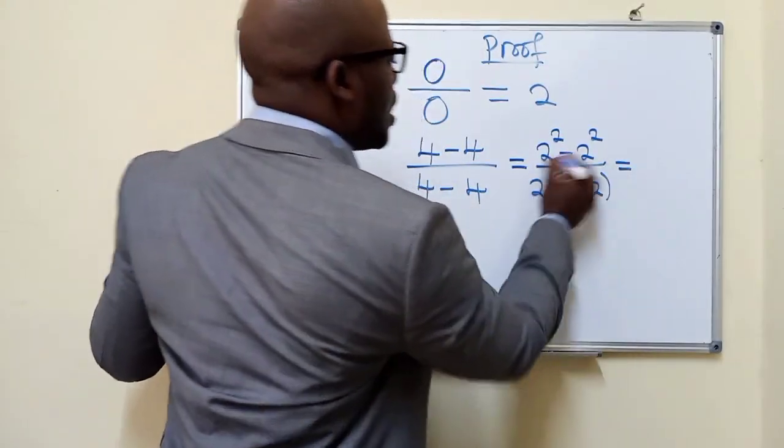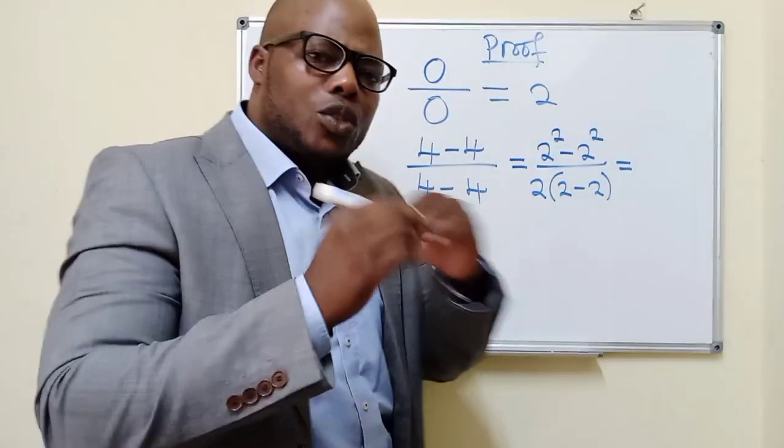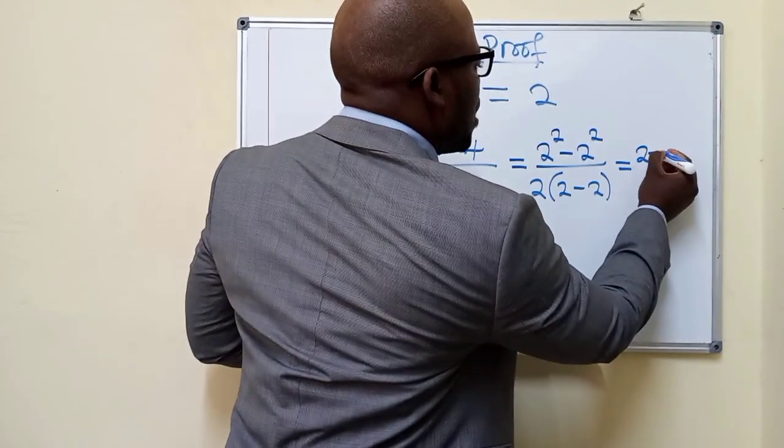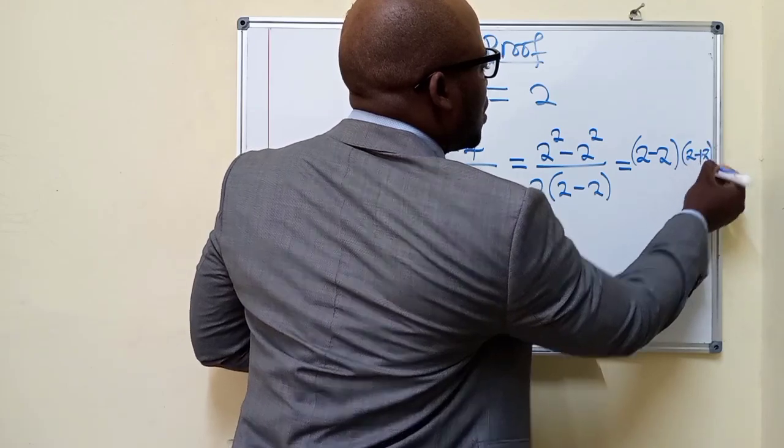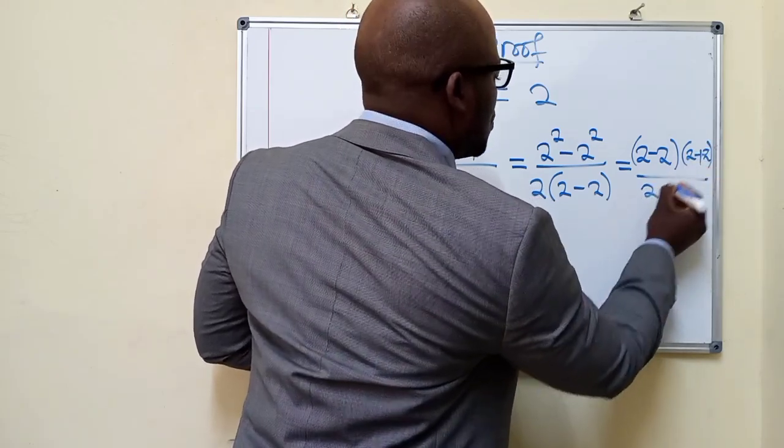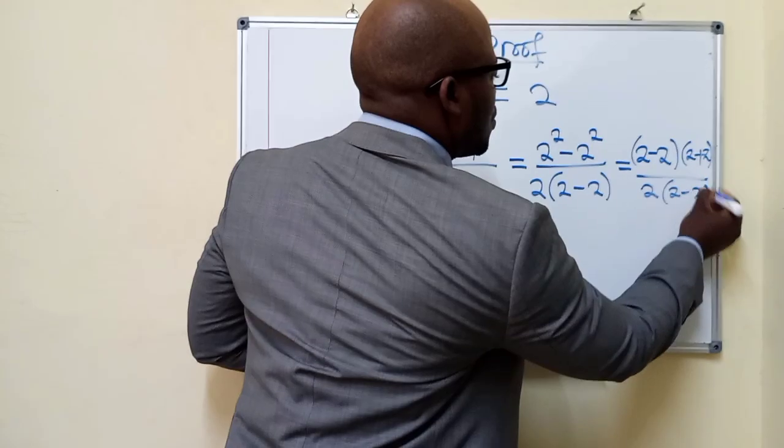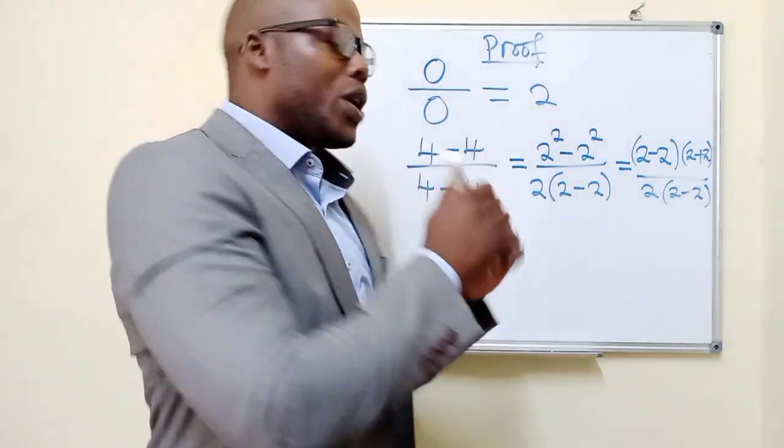Now here, difference of two squares, it will be (2 minus 2)(2 plus 2). And over 2(2 minus 2). I think now you get the picture, where it's going.